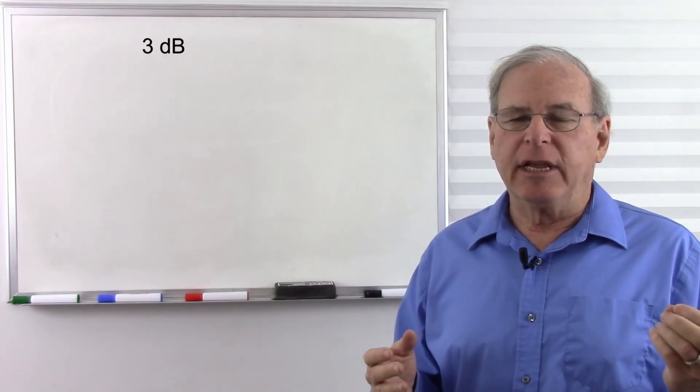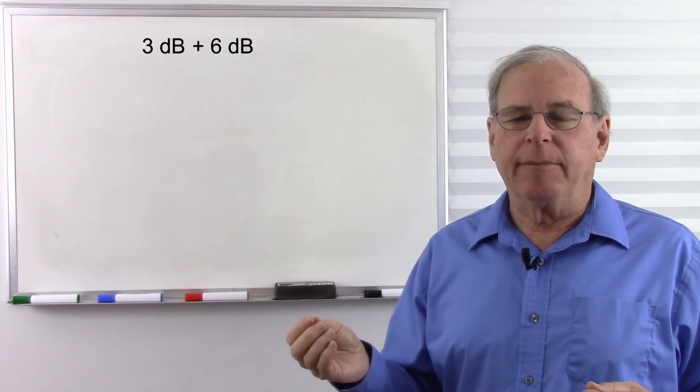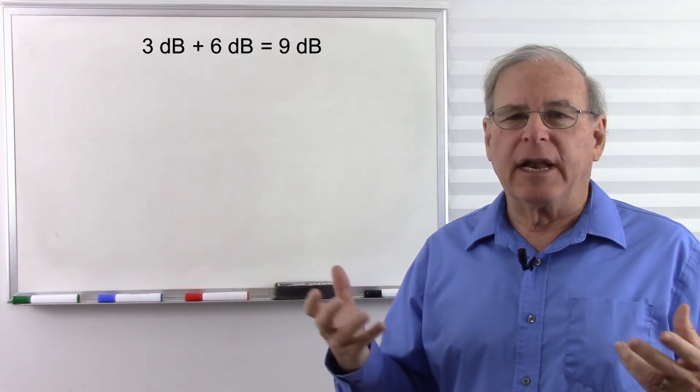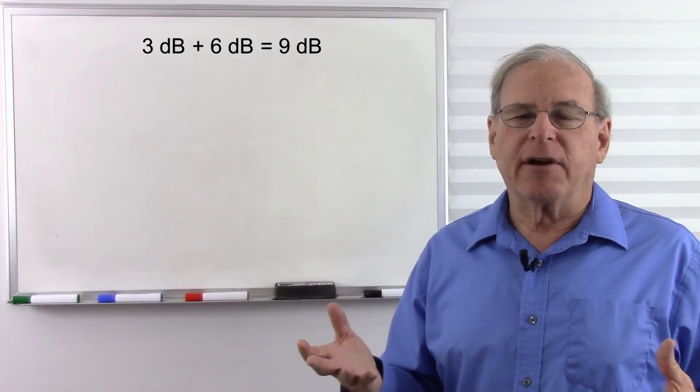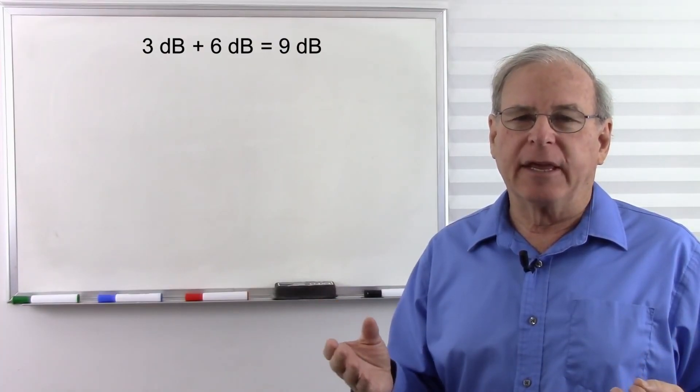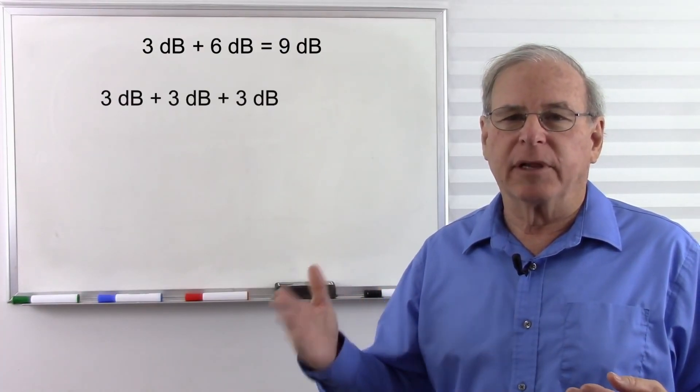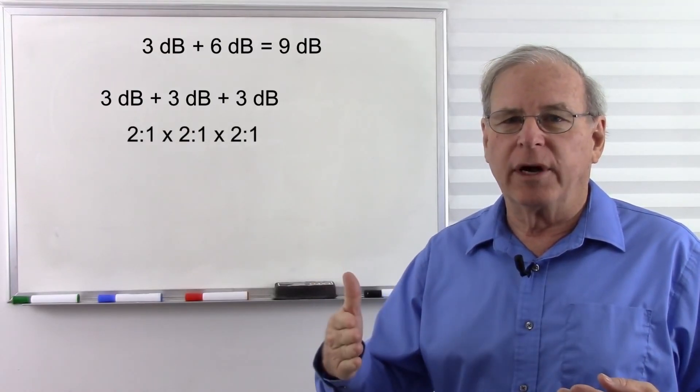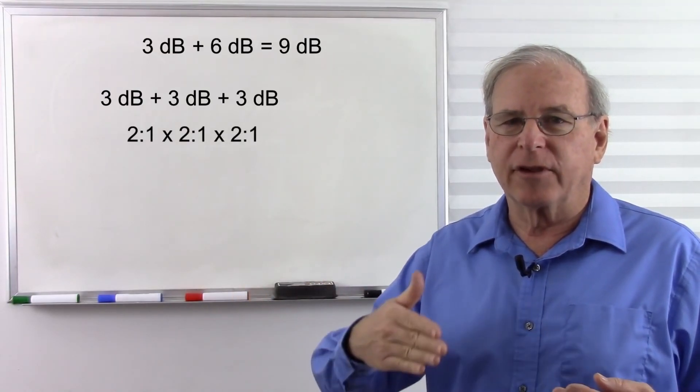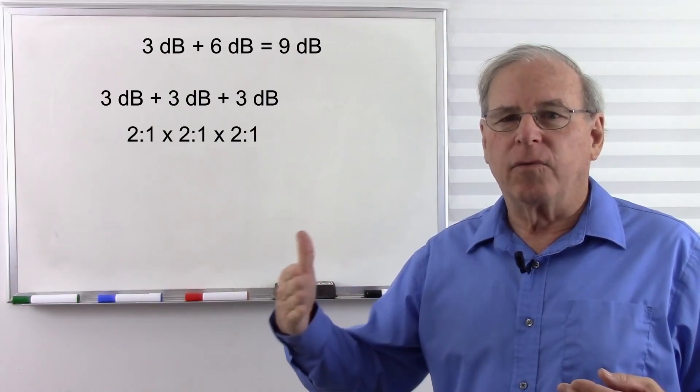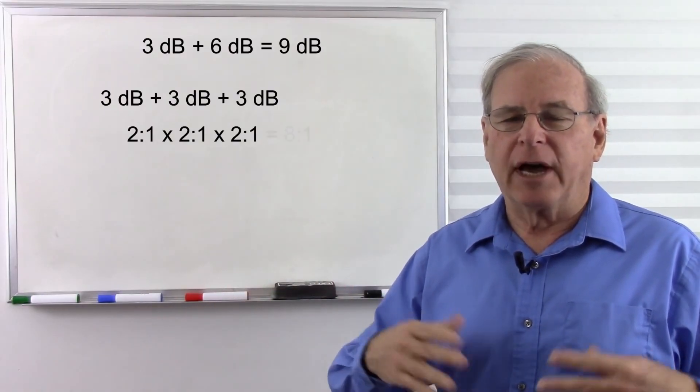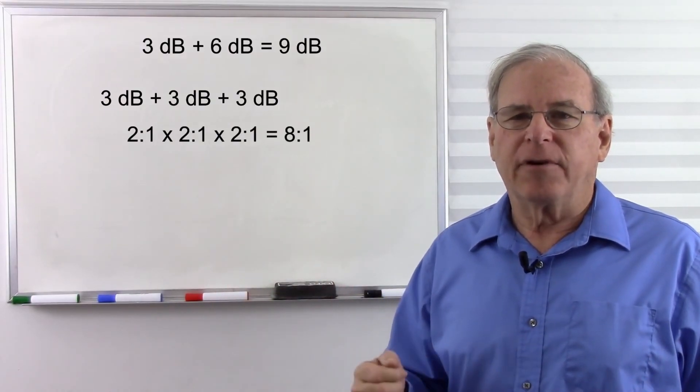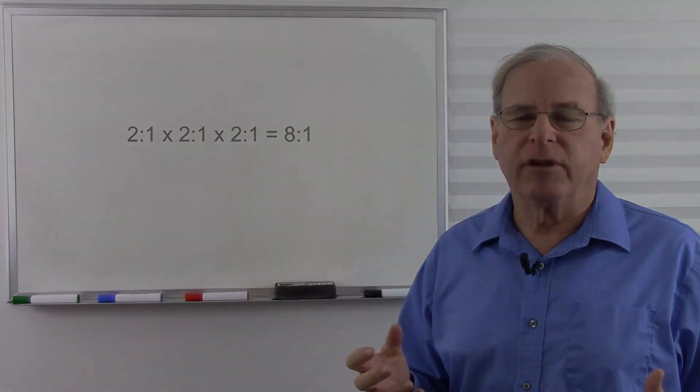So if we have a system that has 3 dB loss here and 6 dB loss there, that's a total of 9 dB. And then once we figure out the total loss, we can figure out what that is. Because 9 dB is 3 plus 3 plus 3, each time we go 3, that's a 2 to 1 loss. So it's 2 to 1, 2 to 1, 2 to 1, so that's a 2 to 1 loss, 4 to 1, 8 to 1. So 9 dB is an 8 to 1 loss. Very easy to do the math in your head if you're using decibels.